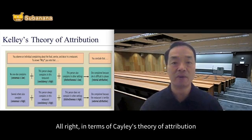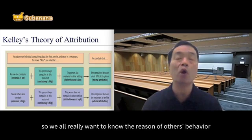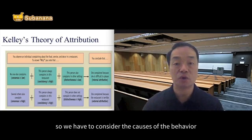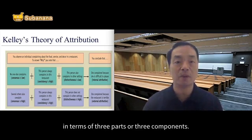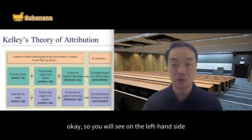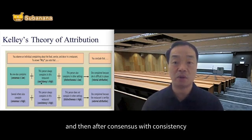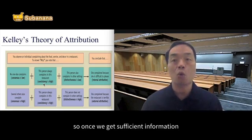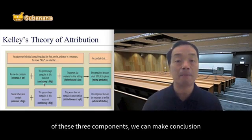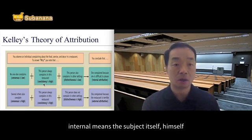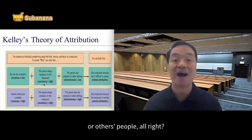In terms of Kelley's theory of attribution, for attribution, we all really want to know the reason for others' behavior or the reason for our own behavior. According to this theory, we have to consider the causes of the behavior in terms of three components. The first is called consensus. After consensus, we have consistency. And finally, distinctiveness. According to Kelley's theory, once we get sufficient information for these three components, we can conclude whether the behavior is caused by internal — the subject itself — or external — the environment or other people.